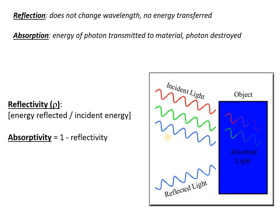We can quantify these mathematically as the reflectivity of a material — that is, the total energy reflected divided by the total incident energy, or the energy that hit the surface. It's just a fraction, less than one, and it is basically the fraction of energy that's reflected. Absorptivity is the opposite: it's one minus reflectivity, basically the fraction of energy that was absorbed.